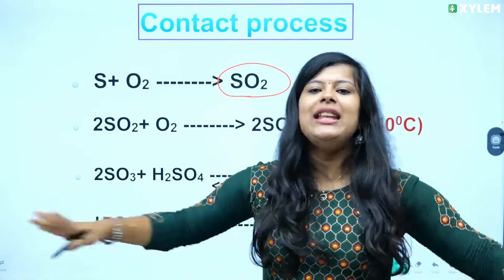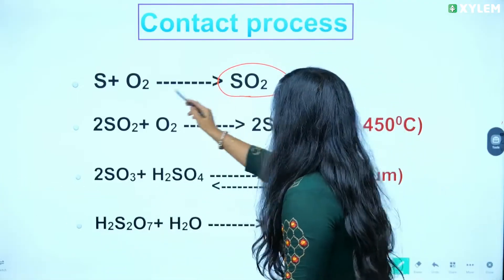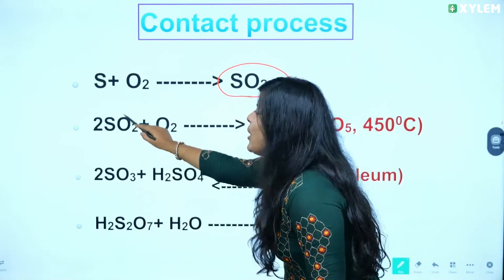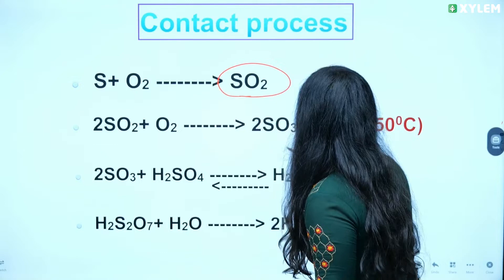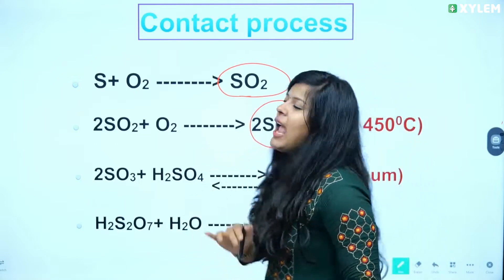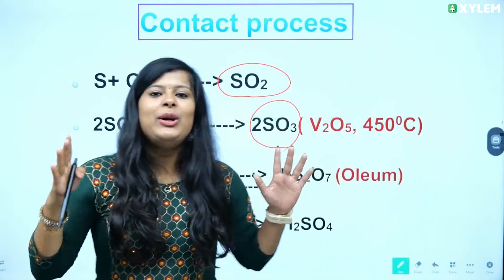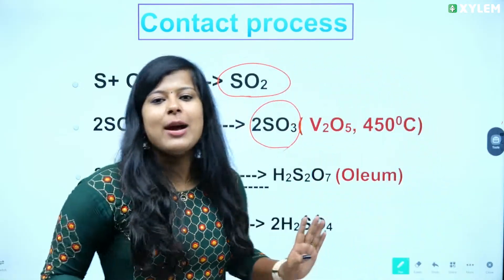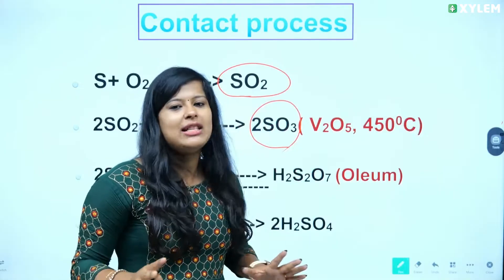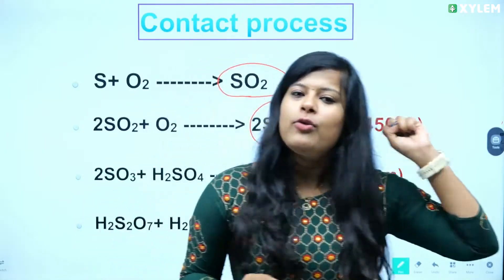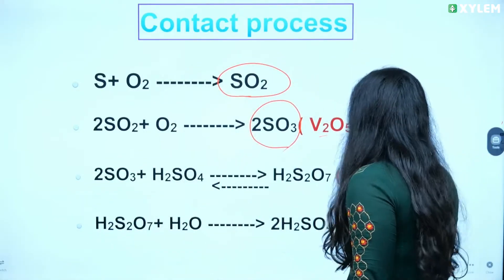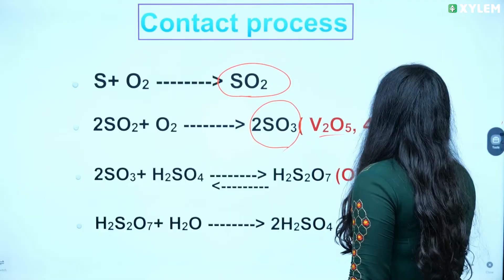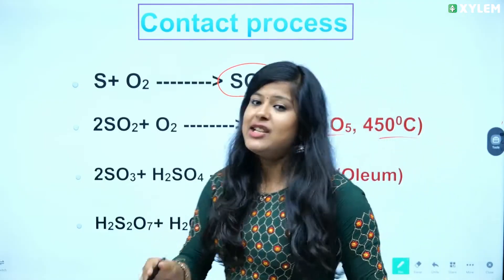You take SO2, so you get SO3. SO2 plus O2 gives SO3. The catalyst used is V2O5 — vanadium pentoxide — at 450 degrees Celsius.